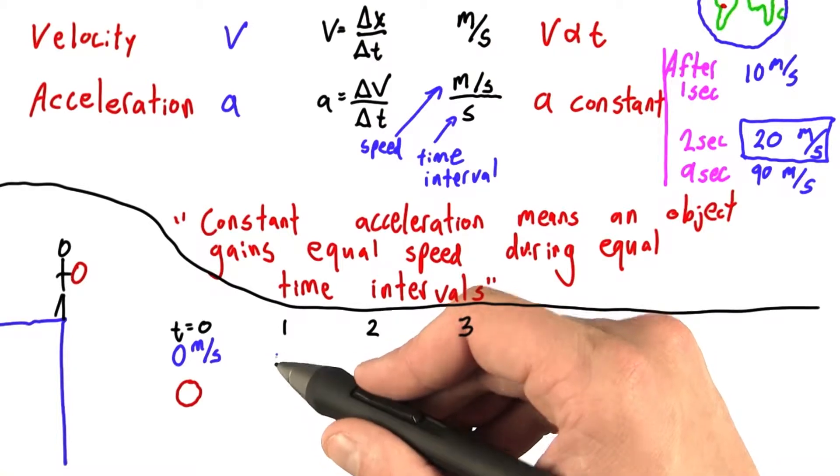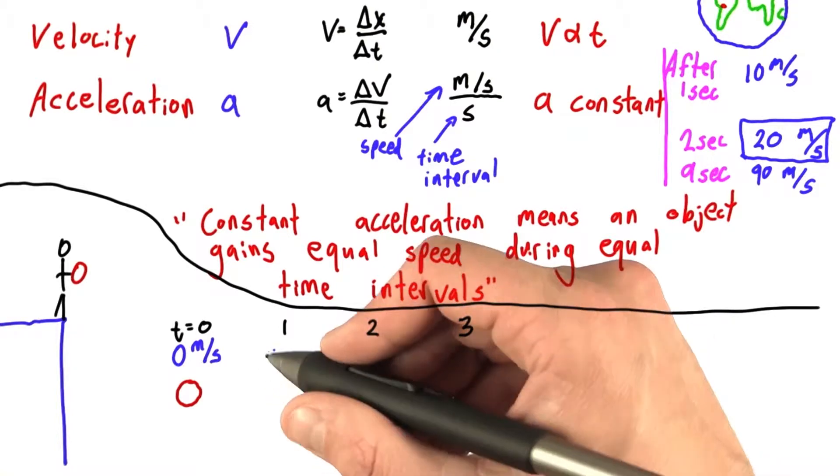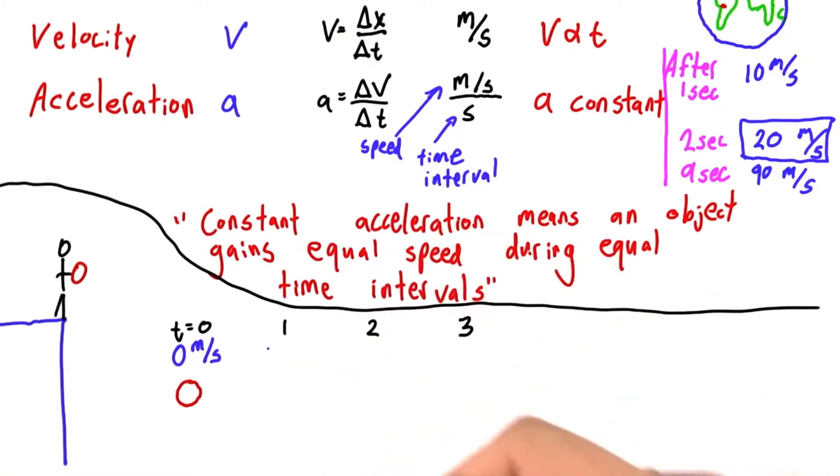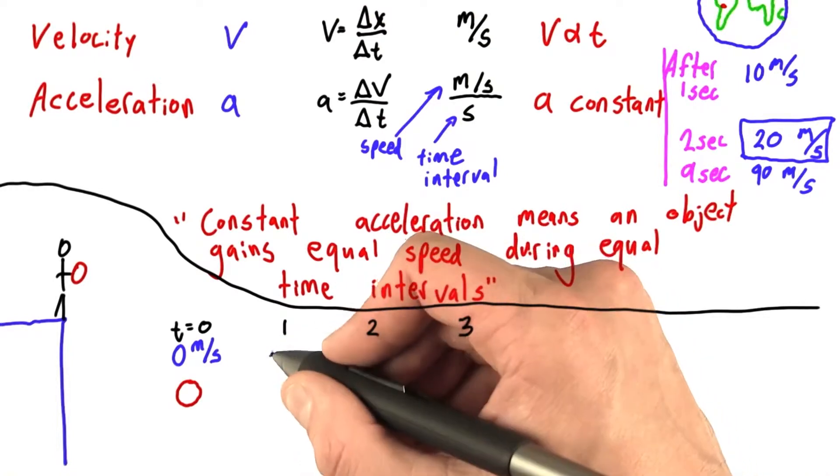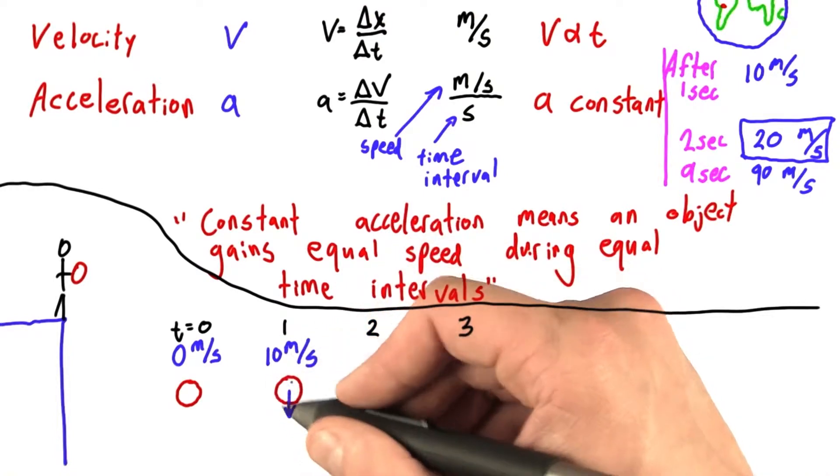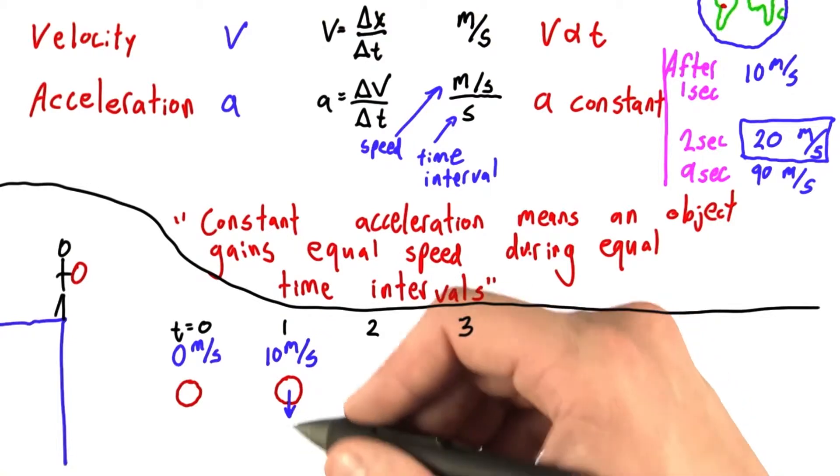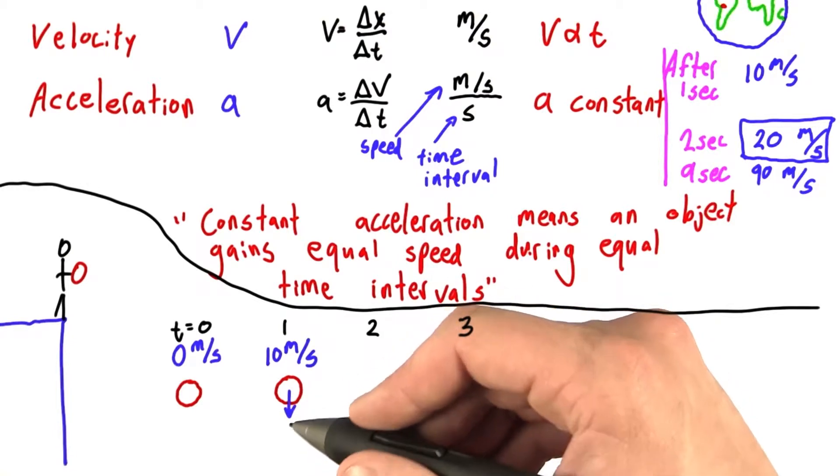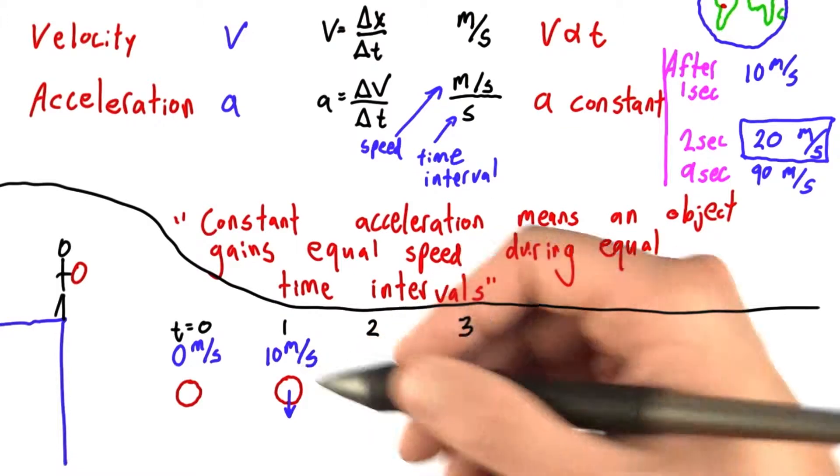If my acceleration is 10 meters per second per second, which we can also say 10 meters per second squared, well then after 1 second, I will have gained 10 meters per second, and I can represent this velocity with a downwards arrow. And the length of this arrow somehow represents the size or magnitude of this velocity.